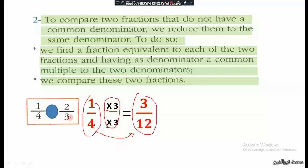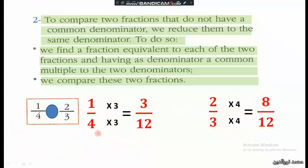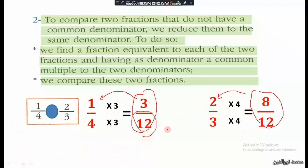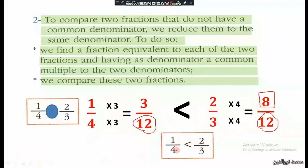For 2 over 3: multiply both terms by 4 — 3 times 4 is 12, and 2 times 4 is 8 — giving 8 over 12. Now 3 over 12 and 8 over 12 are equivalent to the original fractions and share the same denominator. Since 8 is greater than 3, we conclude 2 over 3 is greater than 1 over 4.